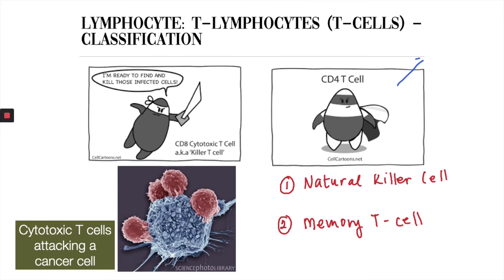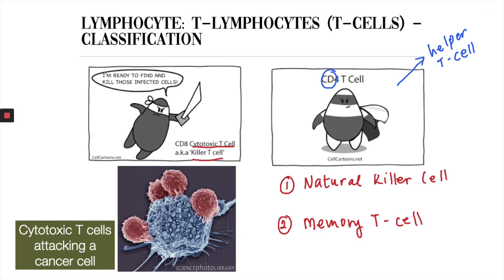CD4 T cells are also known as helper T cells. These are the ones that are affected during HIV infection. The CD4 in their name corresponds to a protein on their surface. On the other hand, we have killer T cells, also known as cytotoxic T cells. Rather than having CD4 proteins on their cell surface membrane, they have CD8.